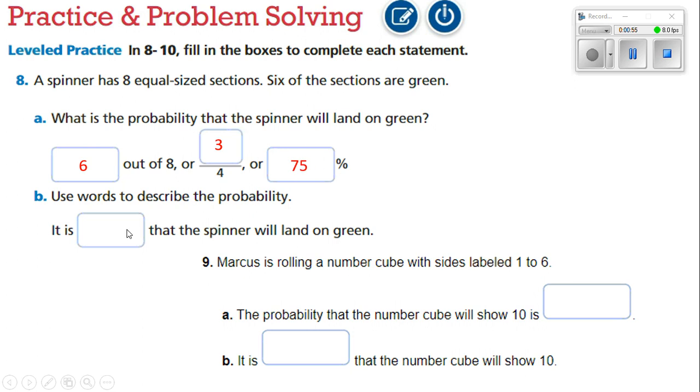Part B says use words to describe the probability. It is blank that the spinner will land on green. Well, since there are six out of eight sections, it is likely that the spinner will land on green.